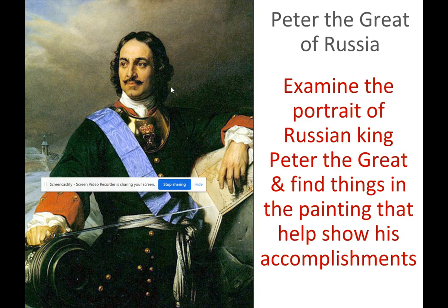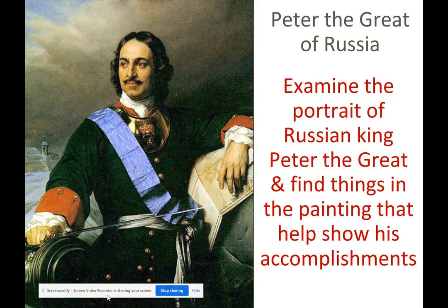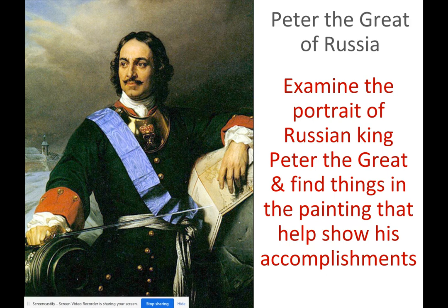Now let's look at Peter the Great of Russia. Looking at his painting, his accomplishments are suggested by the blue sash, the gold-plated bib, the gold buttons on his uniform, and the map beside him.